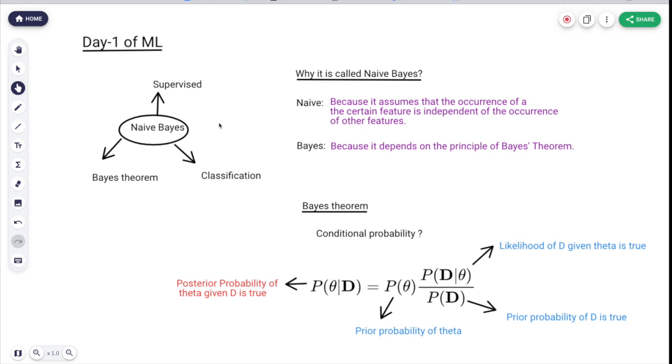It is given by this formula: P(θ|D), probability of theta given that D instance is already done, which we call posterior probability, equals P(θ), the prior probability of theta, times P(D|θ), the likelihood of D given theta is true, divided by P(D), the prior probability of D. This is the basic formula for calculating the probability. One more thing: when we implement this, it will give us only the probabilities, not just classes. Based on that probability, we will decide whether it belongs to this class or that class.